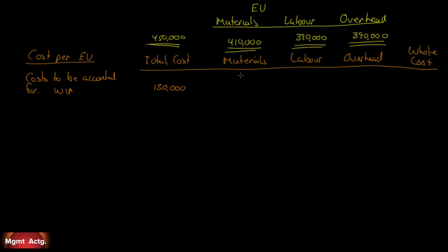Materials is $92,000, labor is $21,000, and overhead is $37,000. Notice we put nothing under whole cost — whole cost will come in later on; there's only one entry in whole cost. So there's our work in process beginning: $150,000 total made up of these components.